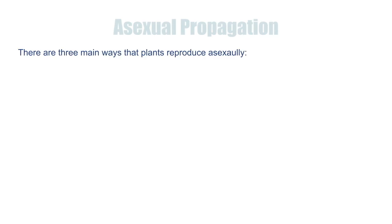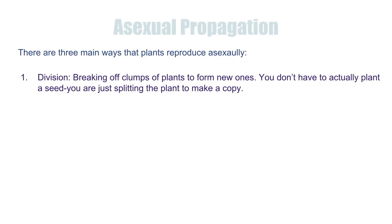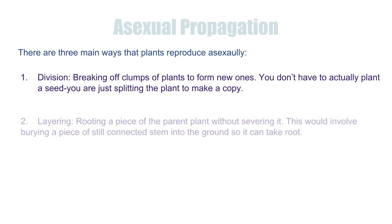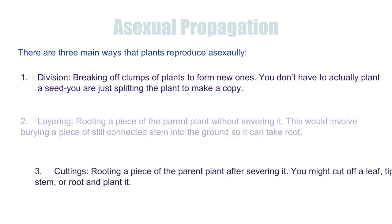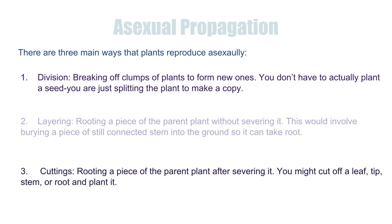There are also ways for plants to reproduce asexually. Three of the main ways include: division — breaking off clumps of plants to form new ones, where you're just splitting the plant to make a copy; layering — rooting a piece of the parent plant without severing it, which involves burying a piece of the still-connected stem into the ground so it can take root; and cuttings — rooting a piece of the parent plant after severing it, such as cutting off a leaf, tip, stem, or root and planting it.